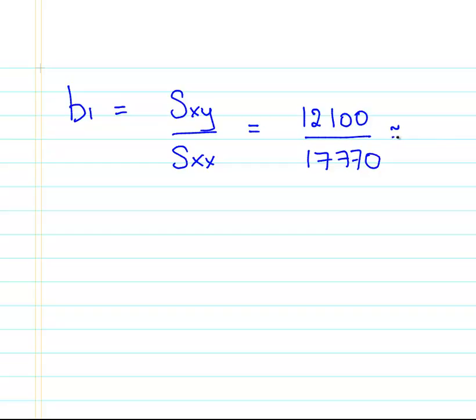The slope estimate B1 equals SXY over SXX. This is 12100 over 17770 approximately equal to 0.68. I think it's close enough to 0.68. Just for the sake of brevity, I'll just keep it to 0.68. You might be a bit more precise in your calculations. Now, that's the slope estimate done. That's simple enough, you think?